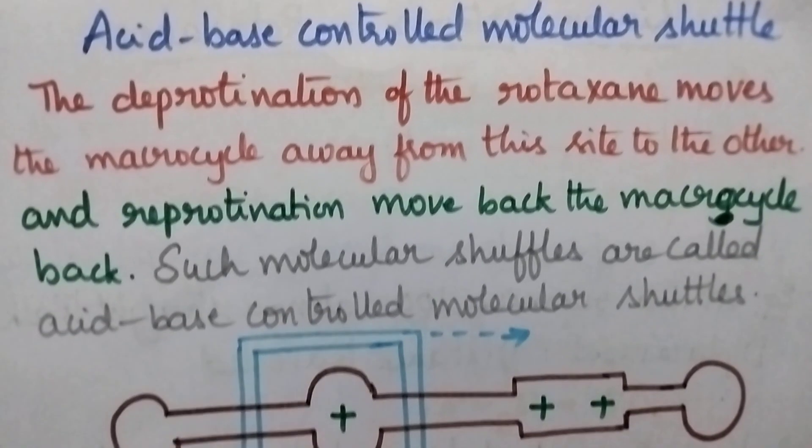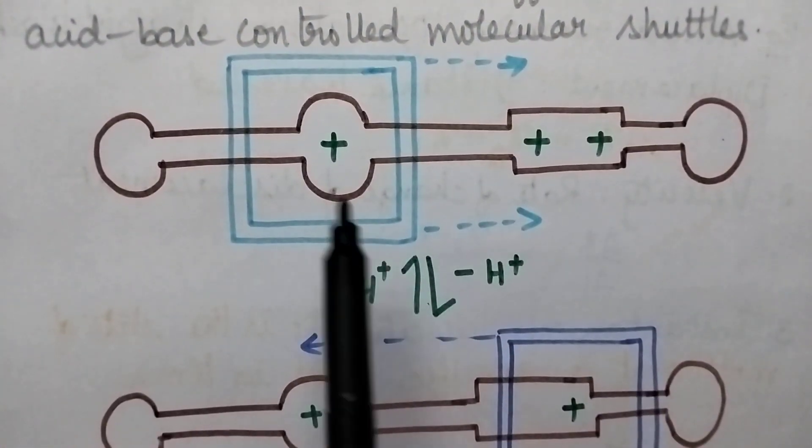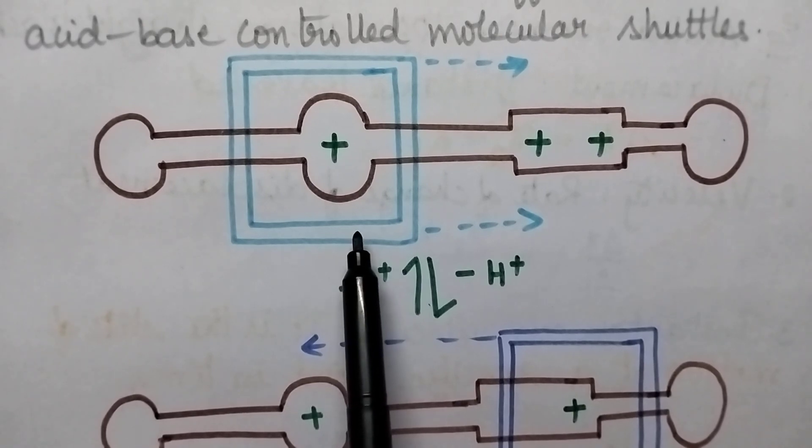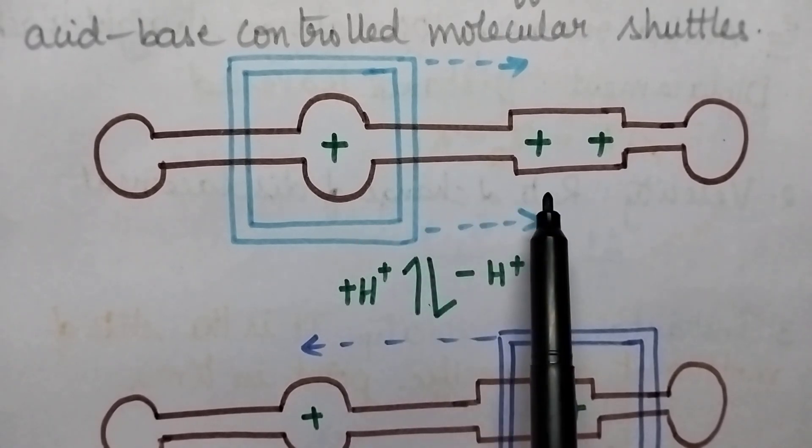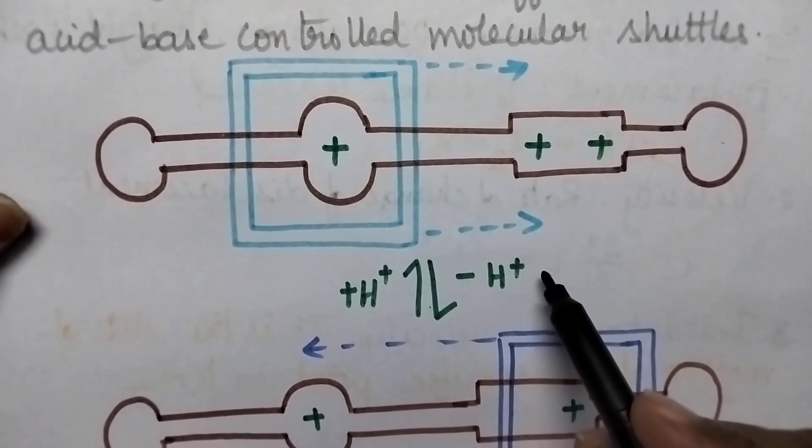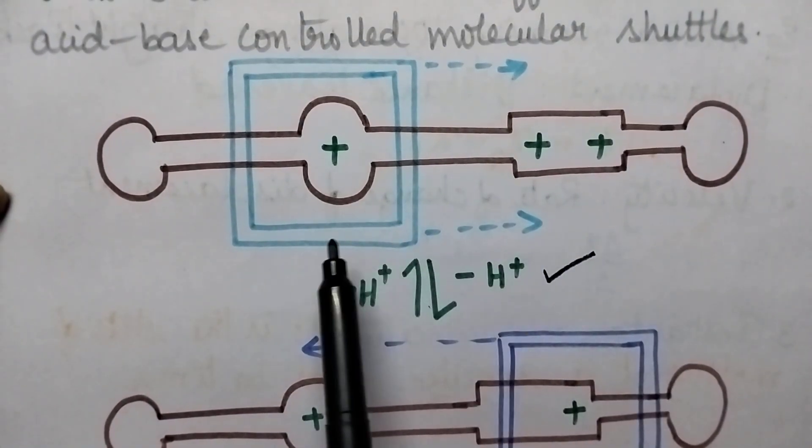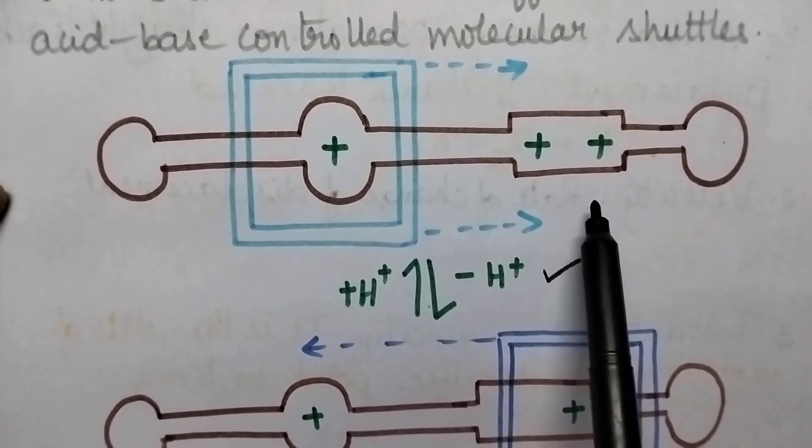Let us consider one example. Here, the macro cycle can be moved from one position to another through deprotonation. That means a proton will be removed, and this macro cycle will move to another position.